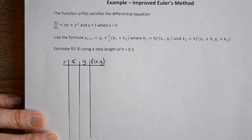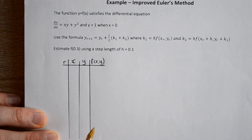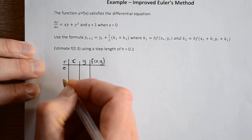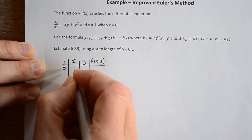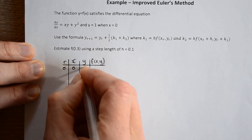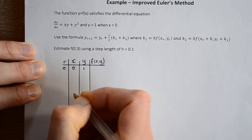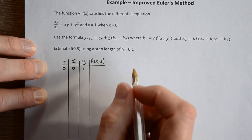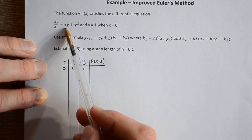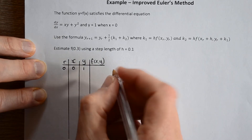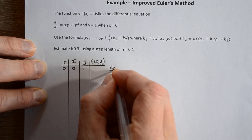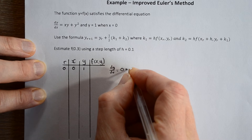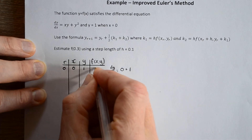So what do we know? We start off with our initial point: x is zero and y is one. This is the start of our first step — we want to find the gradient, so the gradient is x times y plus y squared, which gives a gradient of one.